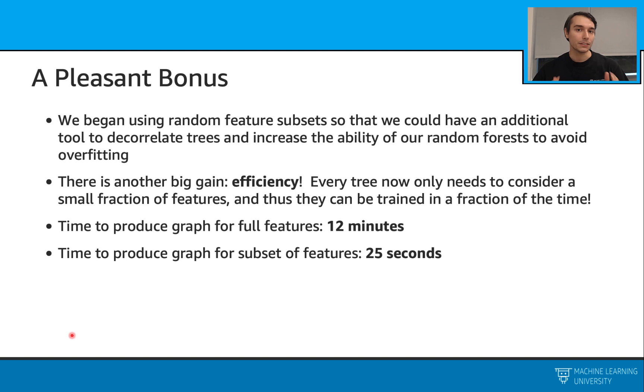If we go and check our last notebook, we will see that our bagging model took about 12 minutes for training. Whereas our random forest model took only 25 seconds. So this is a huge difference.